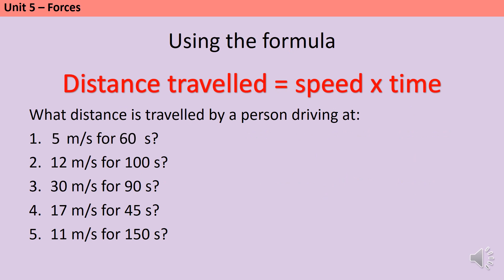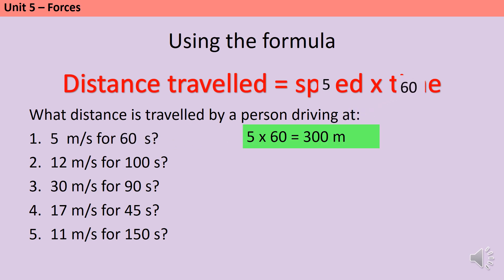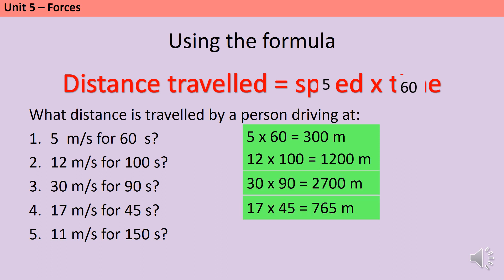Now it's time to practice substituting numbers in and calculating distances. For a motion question, the units tell you which quantity each number represents. So a number followed by meters per second represents speed, and a number followed by seconds represents time. For example, 5 meters per second multiplied by 60 seconds gives a distance of 300 meters. Working through the remaining examples: 12 multiplied by 100 gives 1200 meters; the third gives 2700 meters; the fourth gives 765 meters; and the fifth gives 1650 meters.